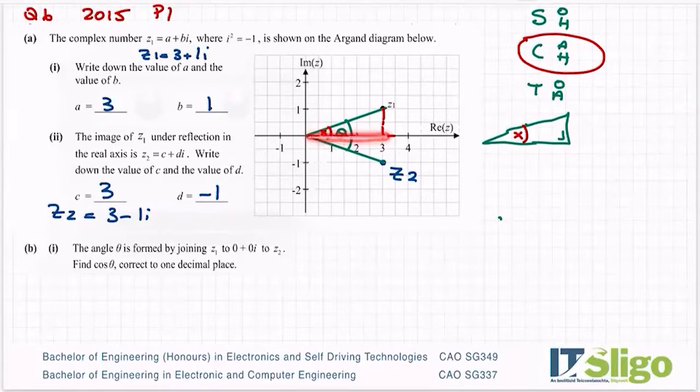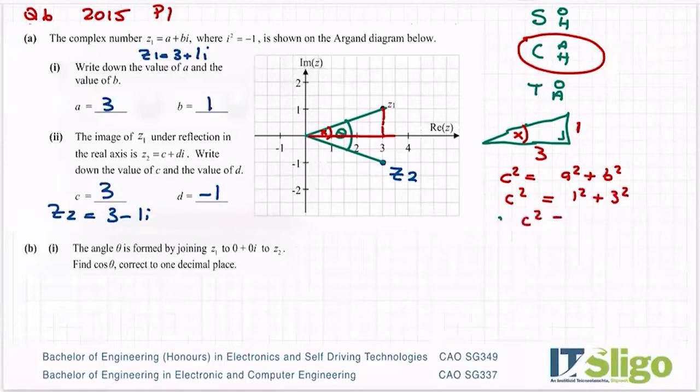To do cos I need adjacent over hypotenuse. This is 3 on the bottom and this height up here is 1. I need to find the hypotenuse so how do I find the hypotenuse? C squared is equal to a squared plus b squared, so Pythagoras's theorem. C squared is equal to 1 squared plus 3 squared which is equal to 1 plus 9, so c squared is equal to 10 or c is equal to root 10.